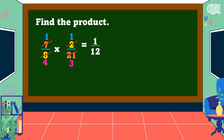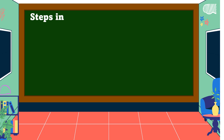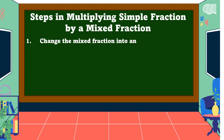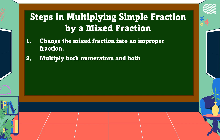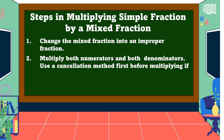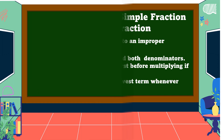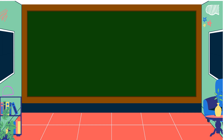The final answer is 1/12. These are the steps in multiplying a simple fraction by a mixed fraction: number one, change the mixed fraction into an improper fraction; number two, multiply both numerators and both denominators — use a cancellation method first if possible; number three, simplify your answer to its lowest term whenever possible.